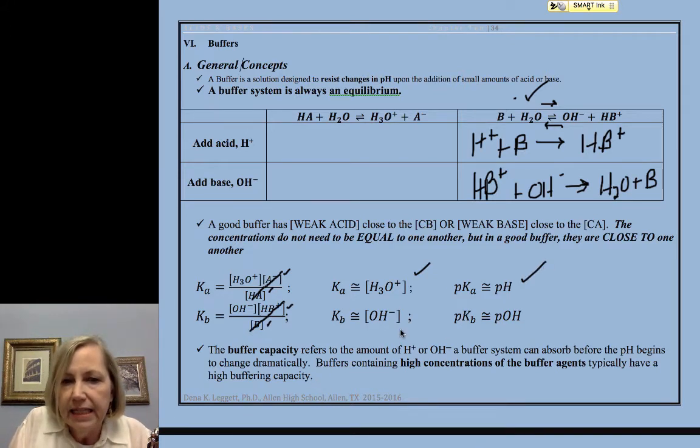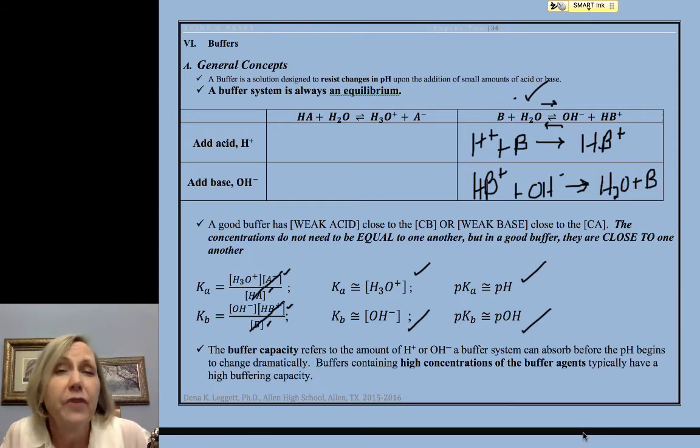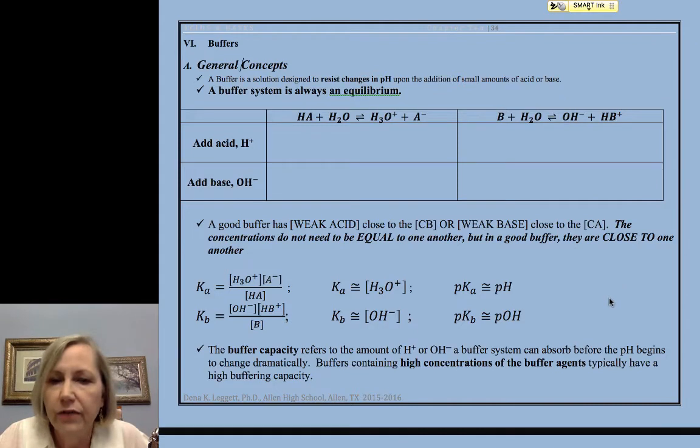If it was a base, it's KB compared to OH-, and pKB being approximately equal to pOH. For some of you who like the Henderson-Hasselbalch equation, I personally like it better for buffers as well. So I'll let you work on that part for the mathematics.